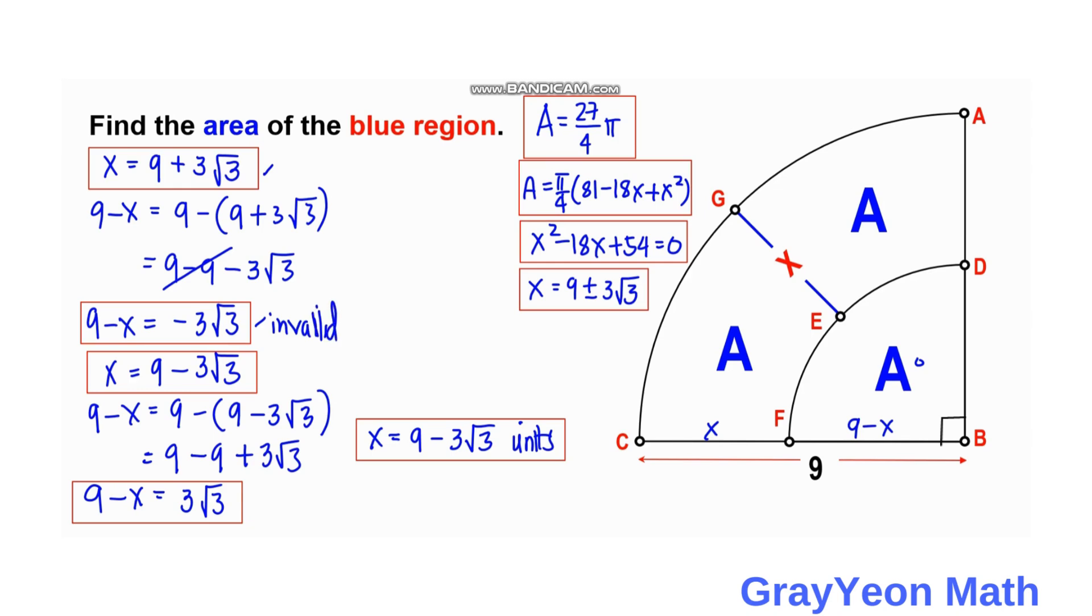And while on the other case, the 9 minus square root of 3 for the value of X gives us a value of a positive value for 9 minus X, which is 3 square root of 3. So this value is the correct answer. So the value should be X equals 9 minus 3 square root of 3 units. And that is our answer.